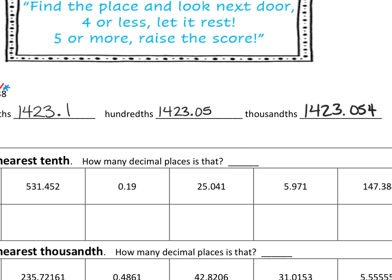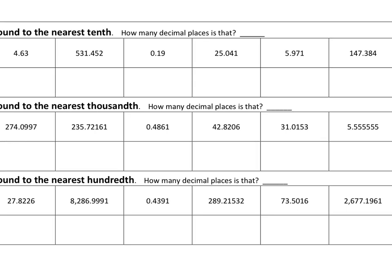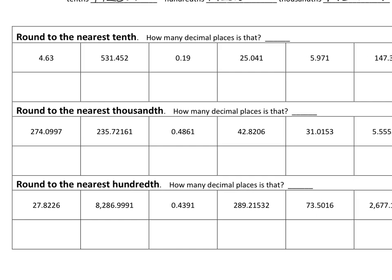Does this all sound familiar? It's just been a minute since we actually took our time and rounded correctly. What I want you to do is work with your table mates to round all the numbers in the boxes. The first section says round to the nearest tenth — one decimal place. The next section says round to the nearest thousandth — three decimal places. And the last one says round to the nearest hundredth — two decimal places. Try all those numbers; some are a little tricky.